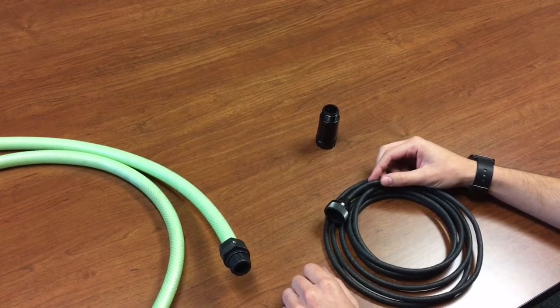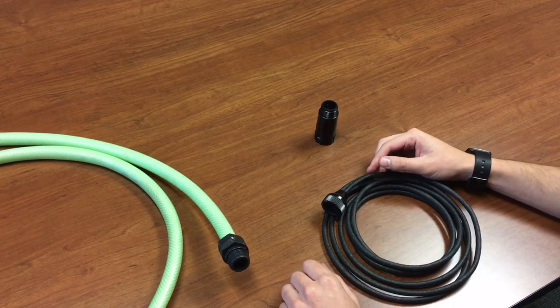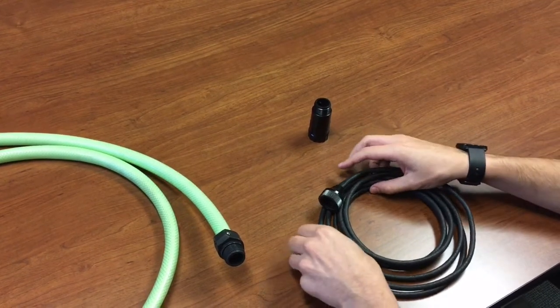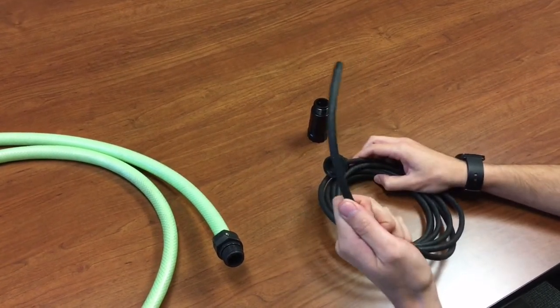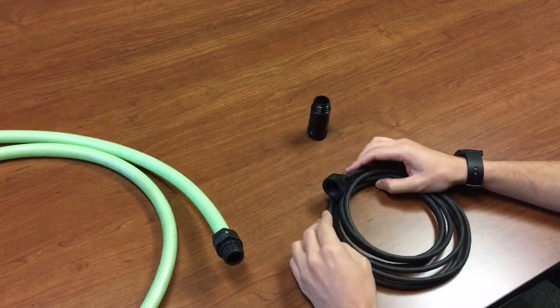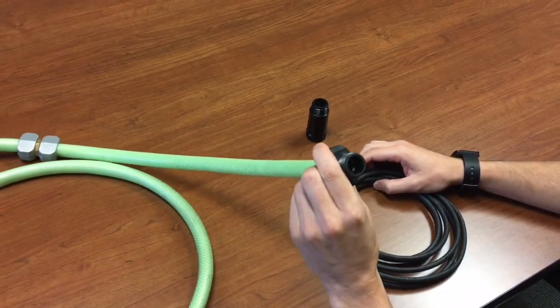Hi, this is in response to a question we received about how to attach soaker hose, quarter-inch soaker hose drip tubing, to standard garden hose.